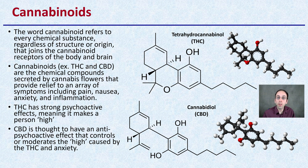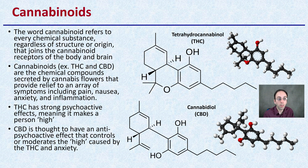Two cannabinoids that are produced in high amounts in cannabis would be THC and CBD. These are chemical compounds secreted by the cannabis flowers that provide relief to an array of symptoms including pain, nausea, anxiety, as well as inflammation.